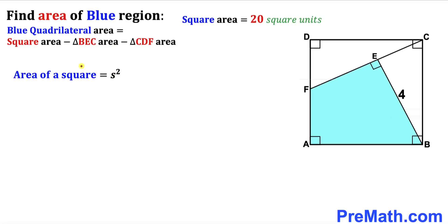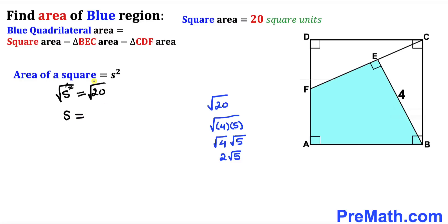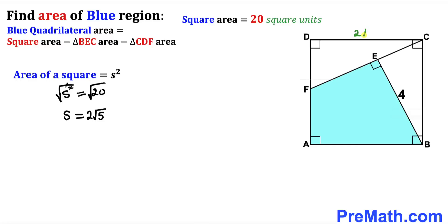Let's recall the area of a square formula: area equals S squared, where S represents the side length. In our case the area is 20, so S squared equals 20. Taking the square root on both sides, the square root of 20 simplifies to 2 times the square root of 5. So all of our side lengths turn out to be 2√5 across the board.